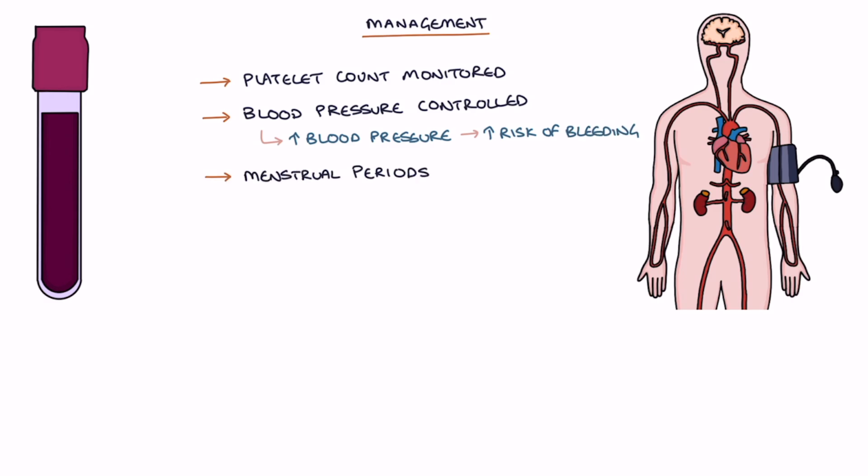Menstrual periods can be controlled with hormonal contraceptives, for example, the combined contraceptive pill.